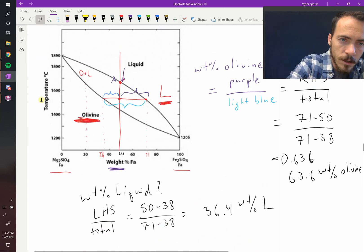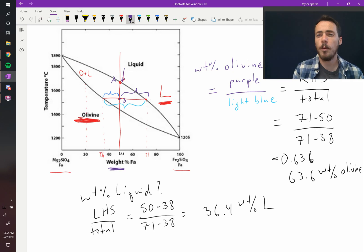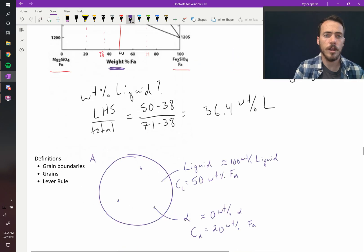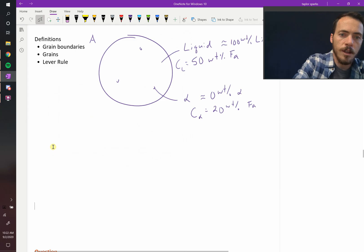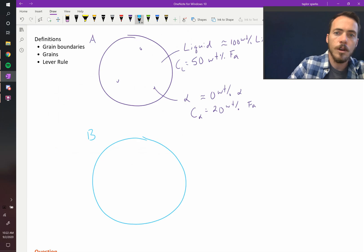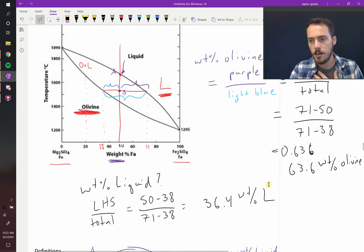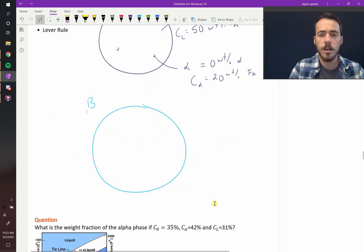At this temperature, right, so at this point right there, we'll call that point B. At point B, we could label it as well. So let's draw the microstructure at that point. At that point, point B, we now know that we've got 63 percent olivine and 36 percent liquid. So it's now more solid than it is liquid. About two-thirds of it is solid and only one-third is liquid. So let's draw that.